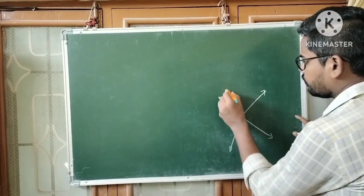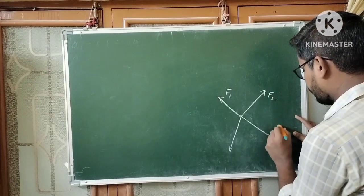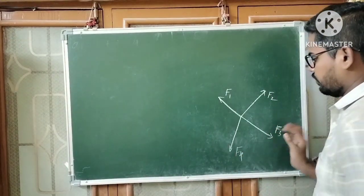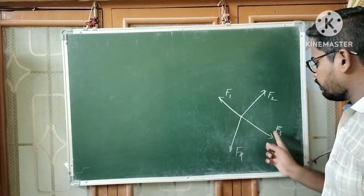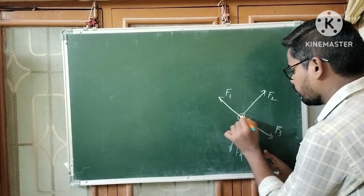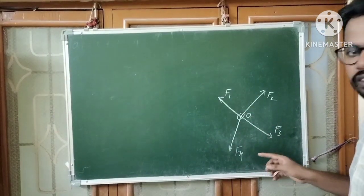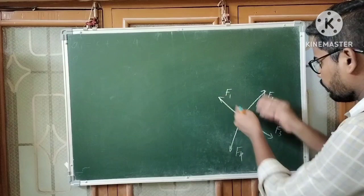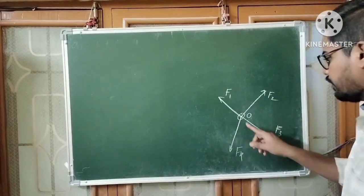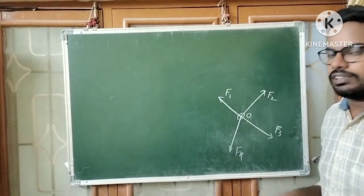I am considering four forces: F1, F2, F3, F4. Their lines of action meet at one point — this point is O. So this type of forces are called concurrent forces because they meet at one point. This type of force system is called a concurrent force system.